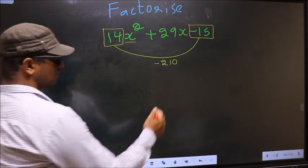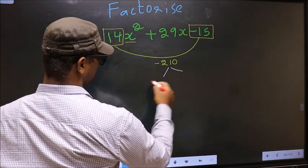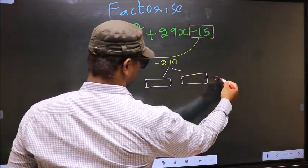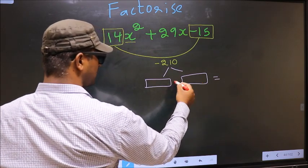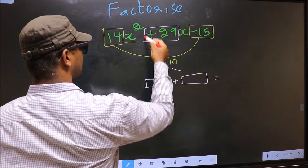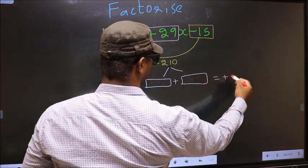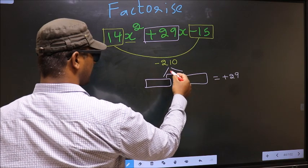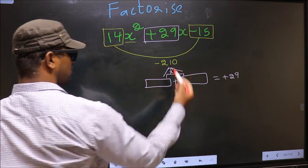Next, you should look out for two numbers such that when you add these two numbers, you should get the middle coefficient, which is +29, and also when you multiply them, you should get -210.